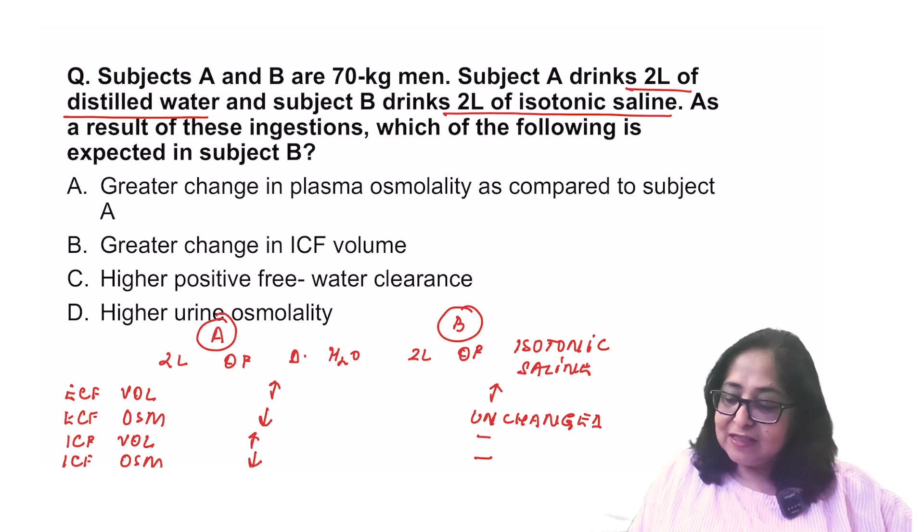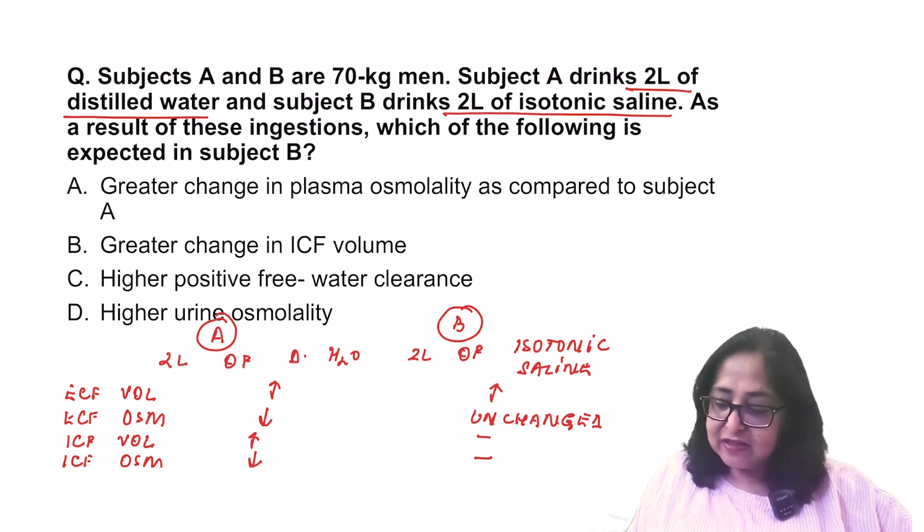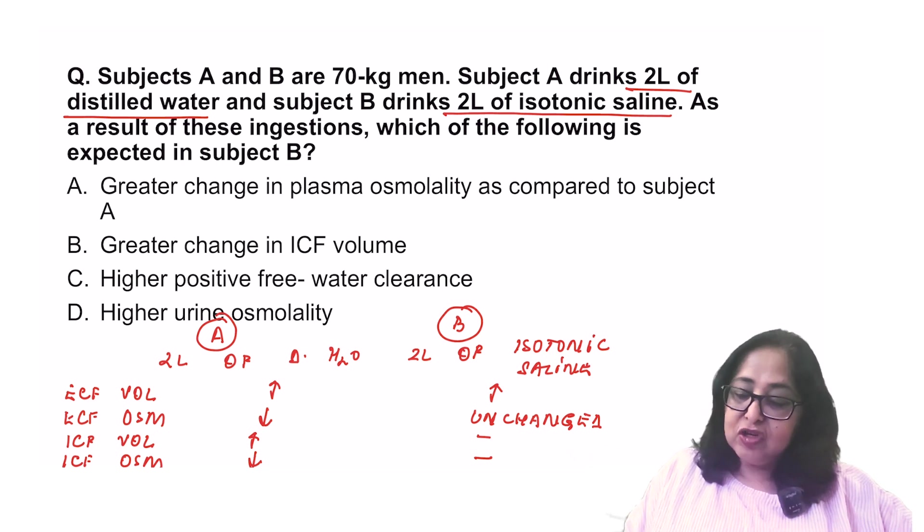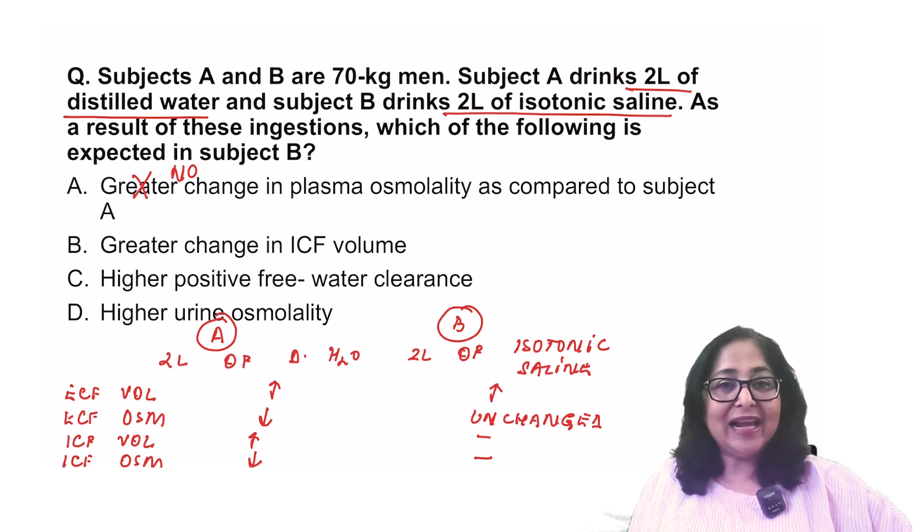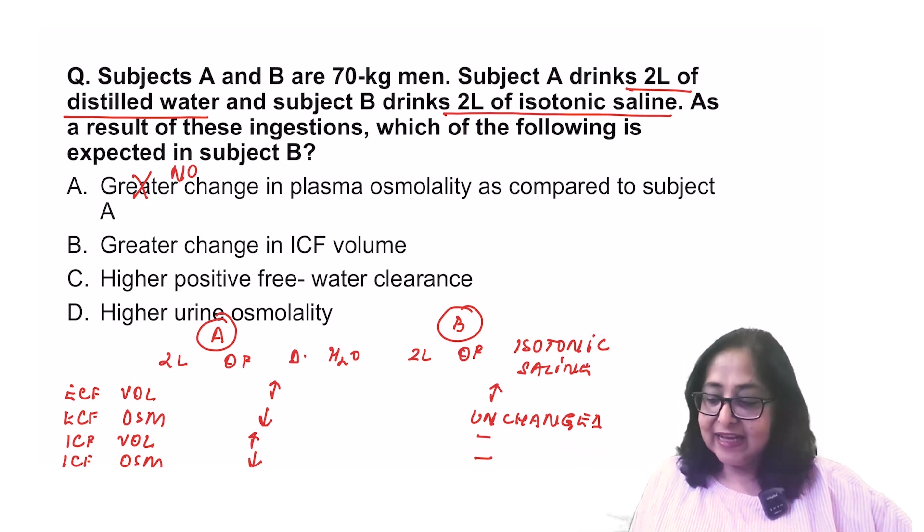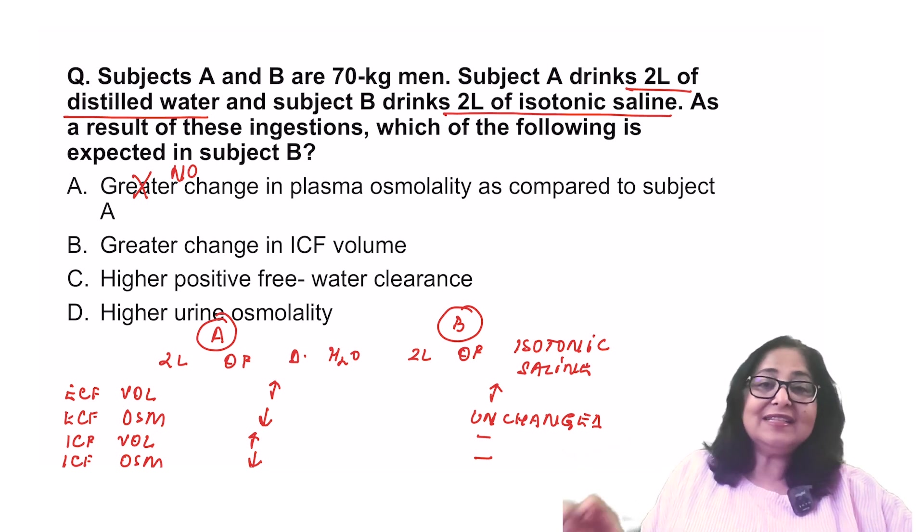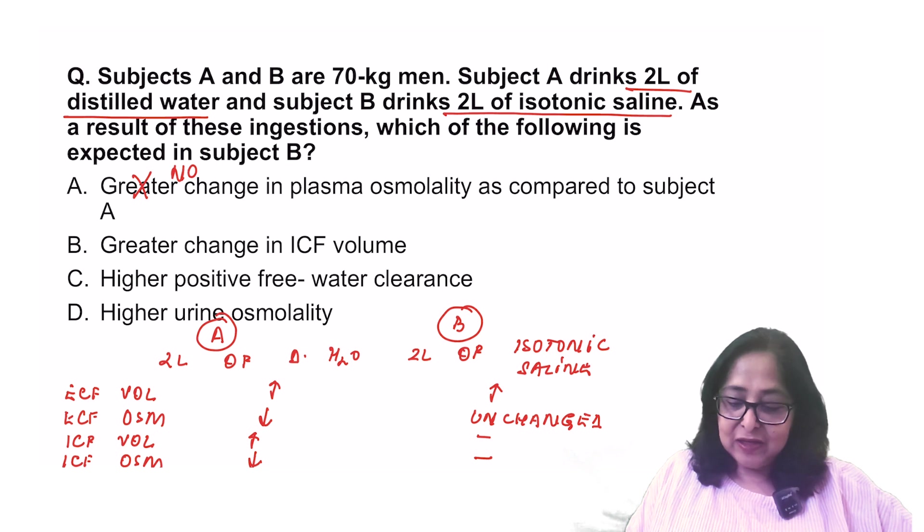Greater change in plasma osmolality as compared to subject A. In fact, there is no change in plasma osmolality or the ECF osmolality as compared to subject A. There is a greater change in ICF volume. ICF volume change occurs in subject A, not in B. So, this is incorrect.